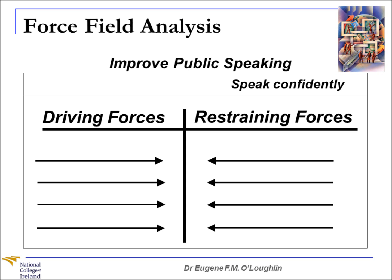So let's take a look at an example. Here's a classic example where the problem statement is that you would like to improve a person's ability in public speaking. So our problem statement is 'improve public speaking,' and the ideal state that we would like this person to reach would be that they would be able to speak publicly and confidently.